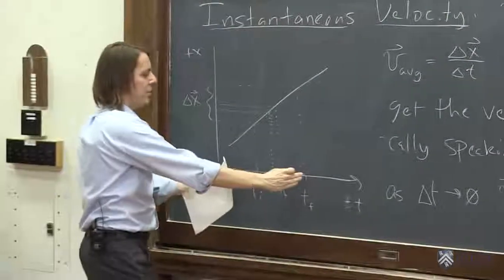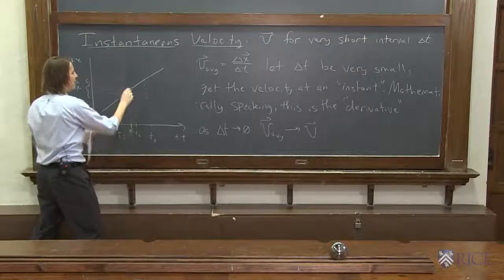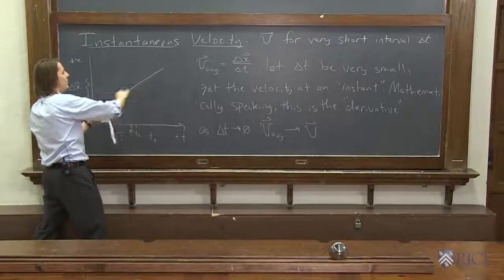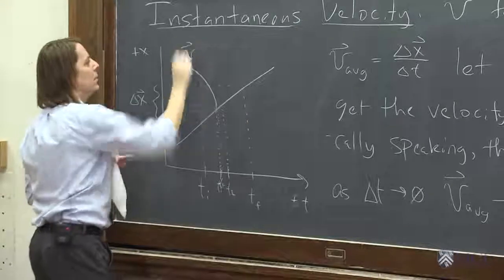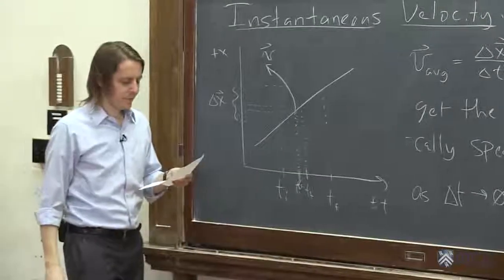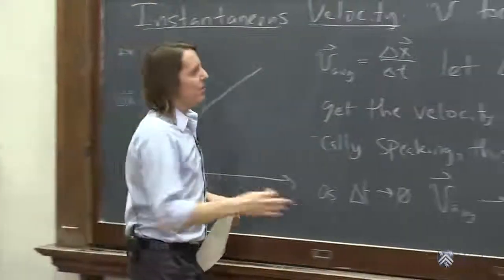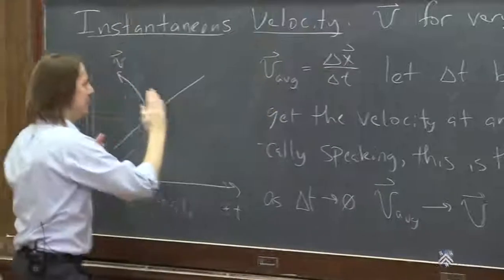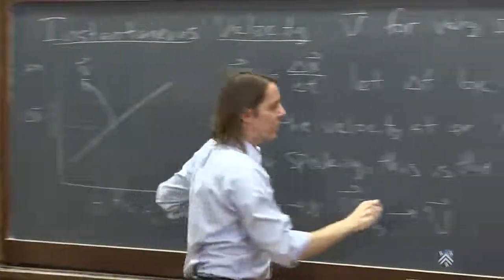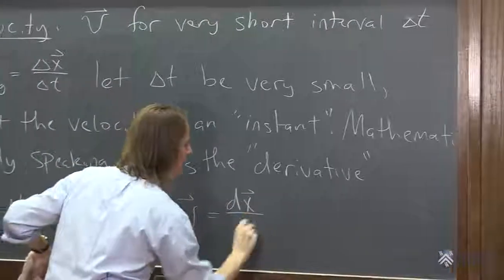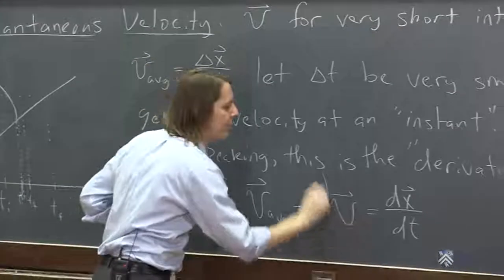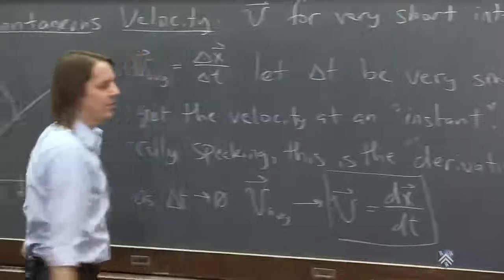Just like I was drawing here, as we shrunk down delta T towards zero, we get not the average velocity over some region, but the velocity at an instant. Instantaneous velocity. Mathematically, then, we don't write the deltas. The deltas mean a big separation. When you shrink it down, we just call it D. It becomes DX/DT. So that is the formula for the instantaneous velocity.